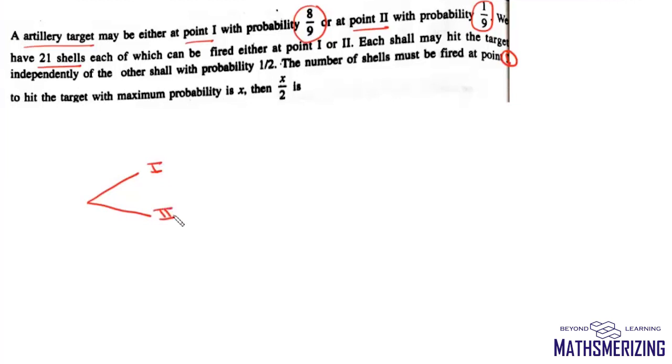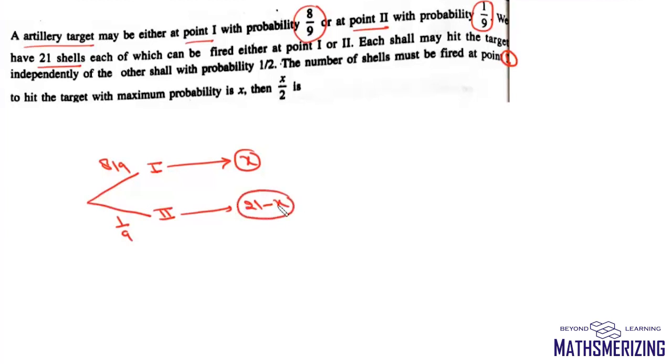Once we fire any shell, we can direct it either at the first target or at the second target. The probability of choosing the first target is 8/9 and the probability of choosing the second target is 1/9. Suppose we fire x shells at the first target and 21 minus x at the second target. We need to maximize the probability of hitting the target.